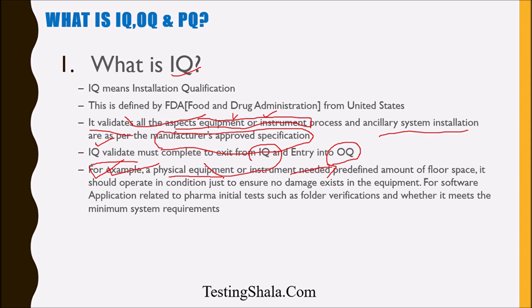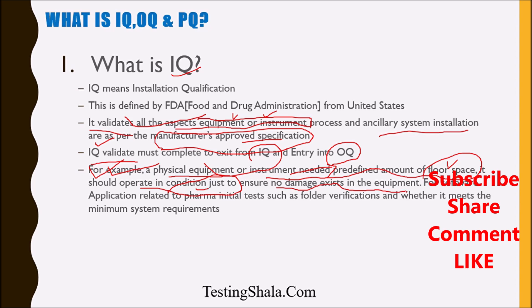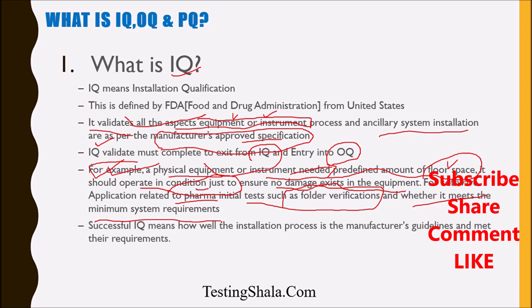For software, we are going to test whether it has a minimum predefined floor space and whether it can operate under the pre-conditions defined in the manufacturer's approved specification. We also validate that there is no damage to the equipment. Similarly, for software applications related to pharma or medical, we validate things such as folder allocations and whether it meets the minimum system requirements to install the software.